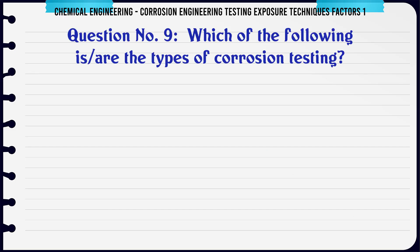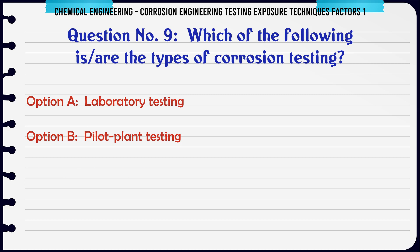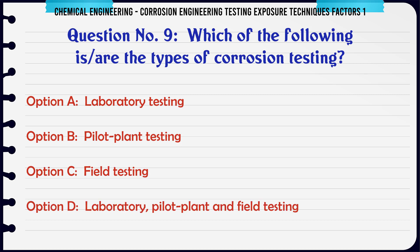Which of the following is/are the types of corrosion testing? A. Laboratory testing. B. Pilot plant testing. C. Field testing. D. Laboratory, pilot plant, and field testing.